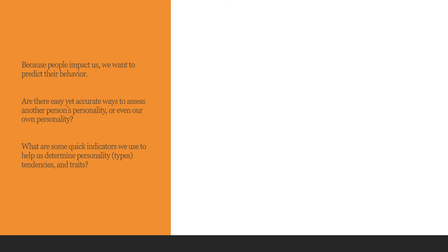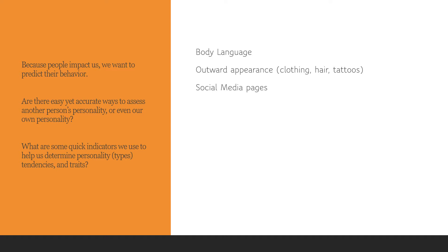What information do you use to predict the behavior of others? Is that information biased? Do your expectations for other people affect how you treat them and then how they behave? When you're introduced to another person, do you look at their body language, their outward appearance? Have you ever looked at their social media pages later on? Do you use that to gauge what that person is like, or is that just a mask?